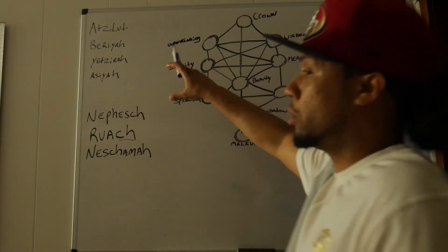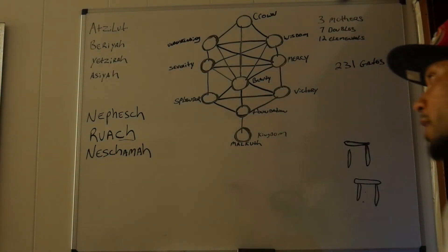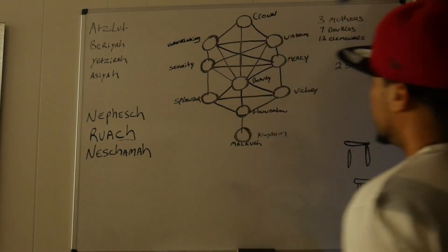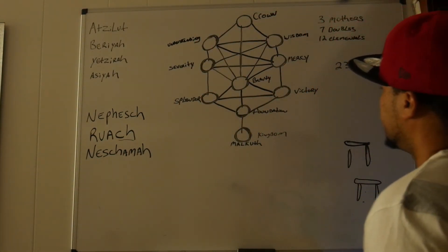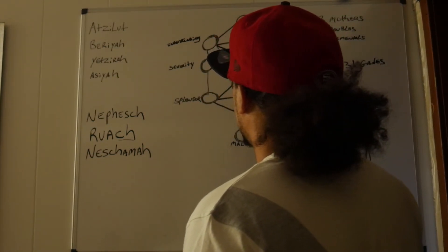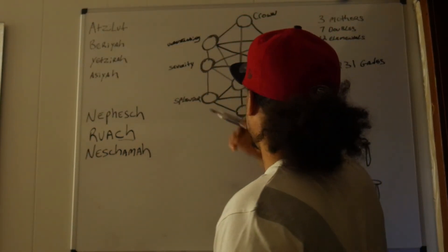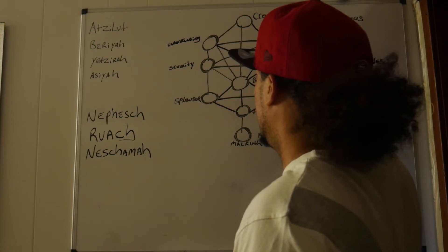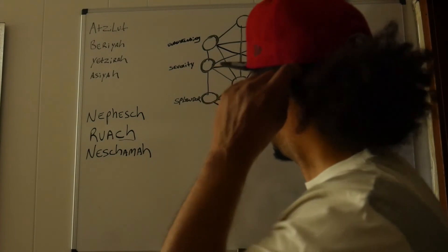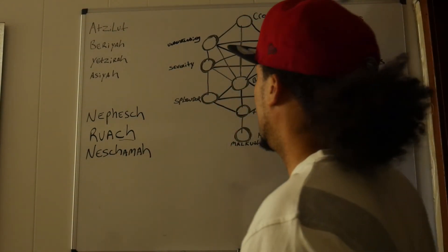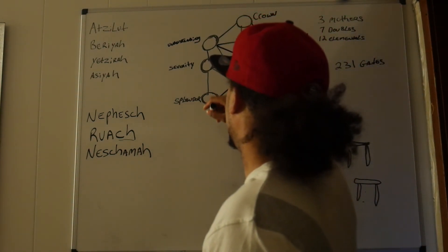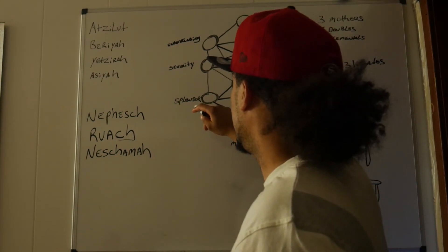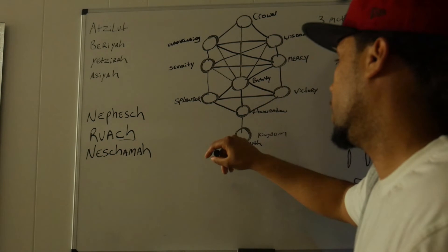So these four worlds also align with the Sephiroth, with the Tree of Life. So Absolute would be the crown, understanding, and wisdom. And Beriah would be severity, mercy, and beauty. And Yetzirah will be splendor, victory, and foundation. And Malkuth will be Asiyah.